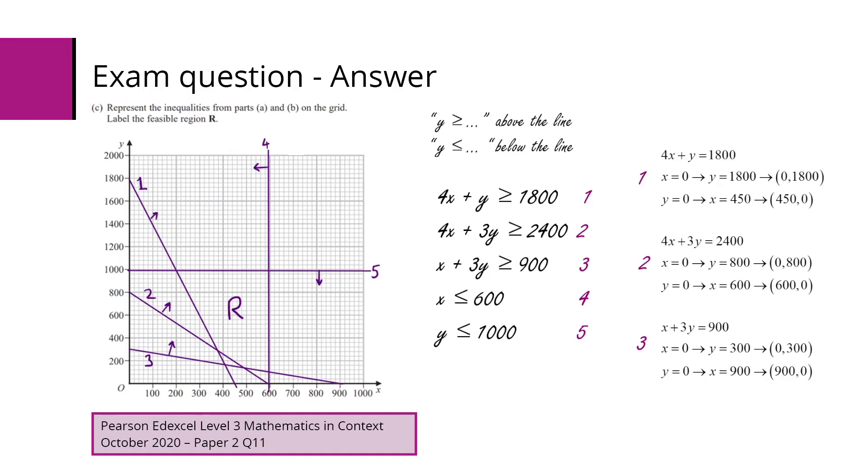So we take each of those inequalities, we can plot them either using table of values or we can use the intercept method. So for equation 1 we've got 4x plus y is greater than or equal to 1800. Sub in x equals zero and y equals zero. We've got the points (0, 1800) and (450, 0). We can plot those points and join them up. We can do the same for equations 2 and 3. Join those points.